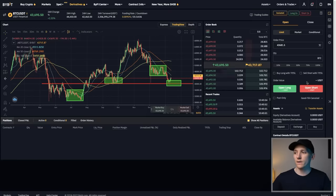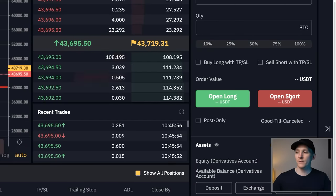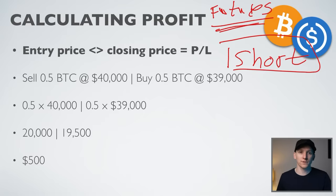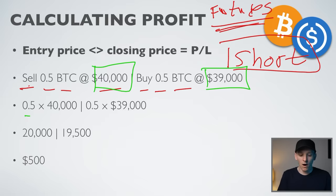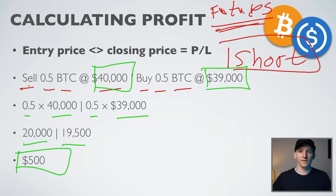On Bybit you can see 'Open Short' — you can sell Bitcoin without actually having any Bitcoin on account. You're selling the futures contract, which is a synthetic agreement that lets you bet on the price going up or down without trading the actual underlying asset. In a short example: sell 0.5 BTC at $40,000 first, then buy back 0.5 BTC at $39,000. Entry is $20,000, exit is $19,500, so you make $500 — exactly the same profit calculation as going long.